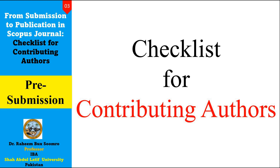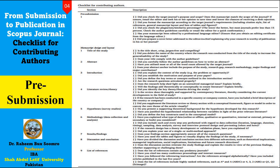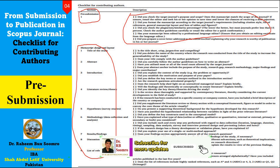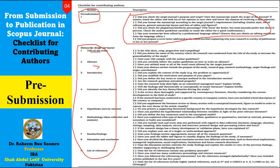Now, the checklist for contributing authors — whenever you are going to submit your research paper, what are the different checklists? The first one is about pre-submission. There are important things you must keep in mind when submitting your research paper in any journal. Others relate to manuscript design and layout, which includes the title, abstract, introduction, literature review, hypothesis, research methodology, research findings, and discussion. These are the different steps you should keep in mind when writing any section of your research paper.